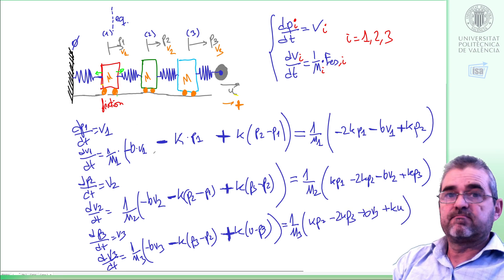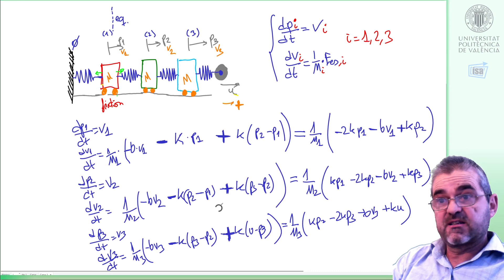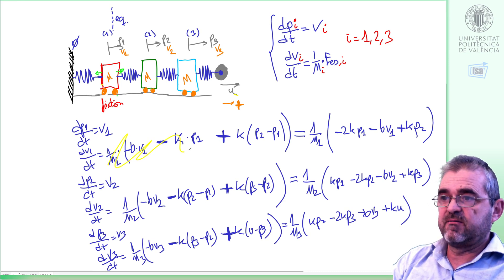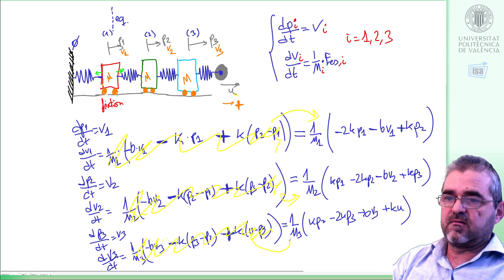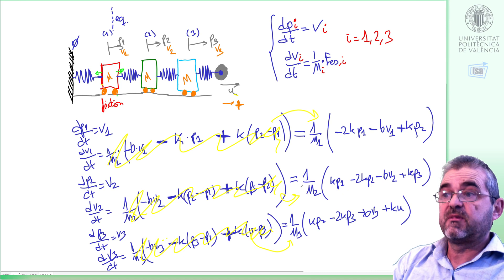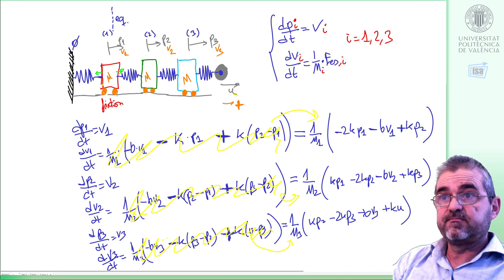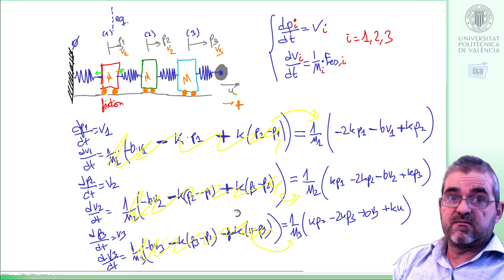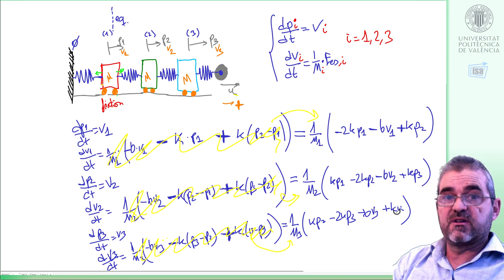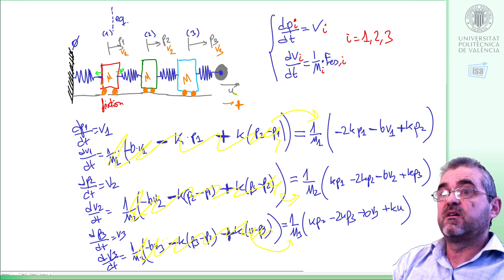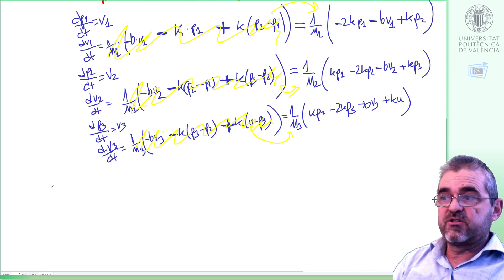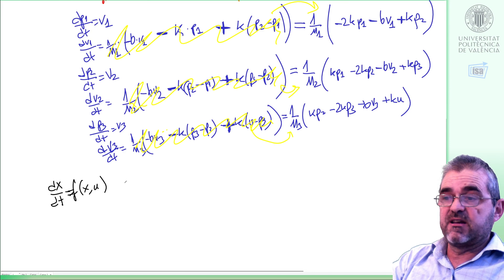So this is finally the set of six equations because we have just rewritten those ones. So we have six equations and six unknowns: three positions, three velocities, and the model is complete assuming that the input U, the signal here, is known for us.